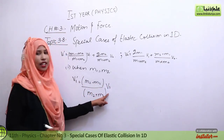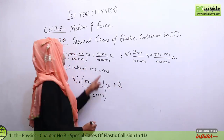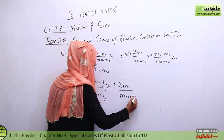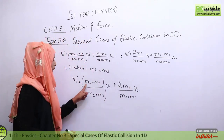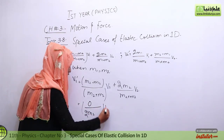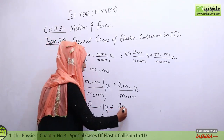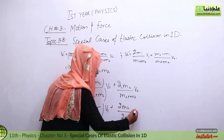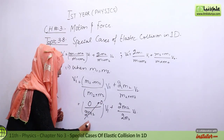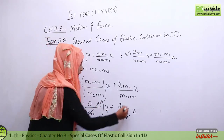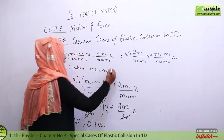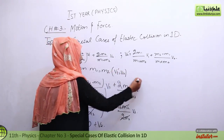Substituting m2 for m1, we get m2 minus m2 in the numerator, which is zero. So zero divided by something gives the entire first term as zero. The second term becomes 2m2 divided by 2m2 into v2, which simplifies to v2. Therefore, v1' is equal to v2.